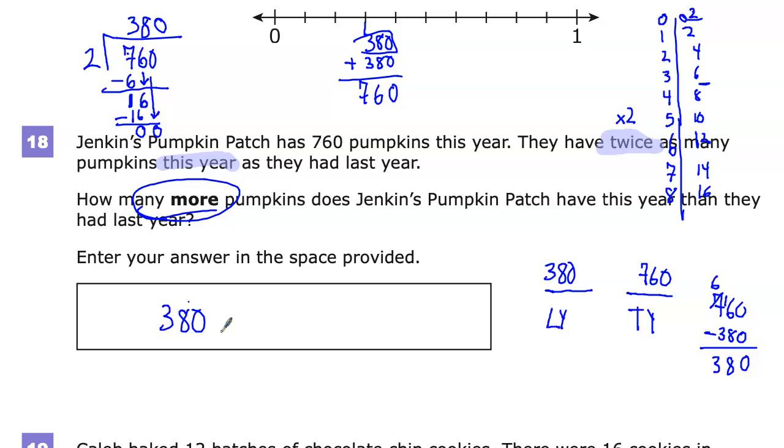It's important in this question to understand the order of time, like what you're trying to find. It would be really super easy to say, well, there's twice and it's 760. So I'll do 760 times 2. And then you'll end up getting the wrong answer. And that's what people are most likely to get incorrect with this problem.